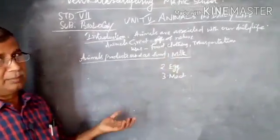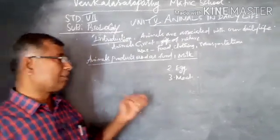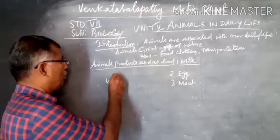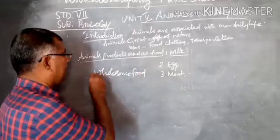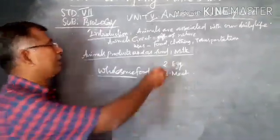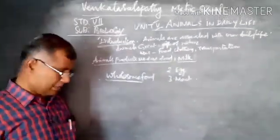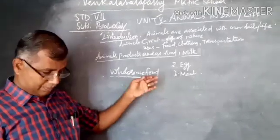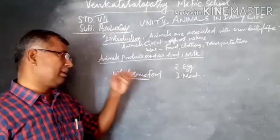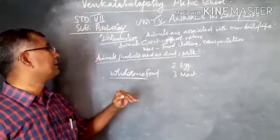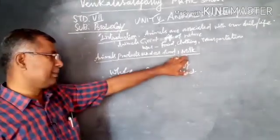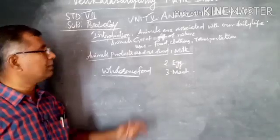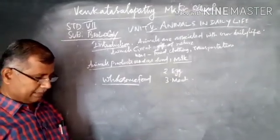The first animal product is milk. What is milk? Milk is secreted by the mammary glands of all mammals. It is a white liquid and is also called wholesome food. Milk is generally rich with protein and calcium, and it is the primary nutrition for all infants in mammals. We obtain milk mainly from cows, buffaloes, camels, and goats.